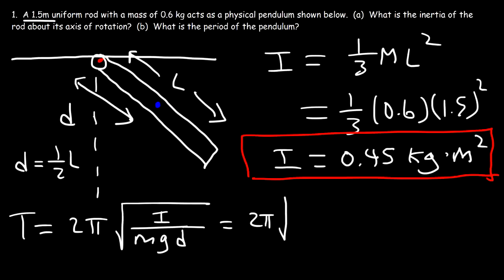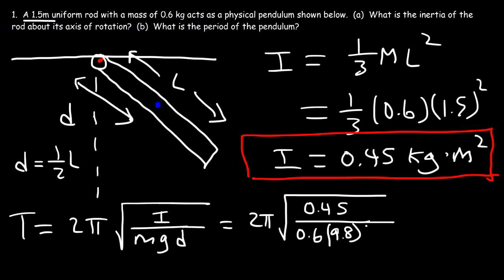So the period is going to be 2π times the square root of the inertia, which is 0.45, divided by the mass of 0.6, times g = 9.8, times D = 0.75 meters. If you type this in you should get a period of about 2 seconds. That's how you calculate the period of a physical pendulum, especially if the pendulum consists of a long rod with nothing attached to it.